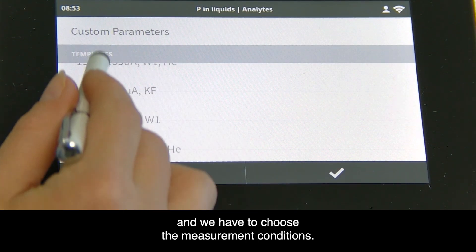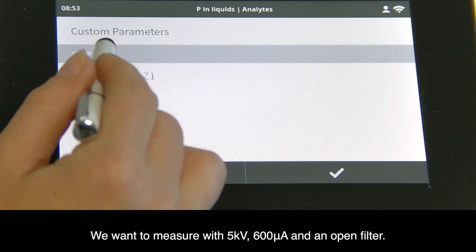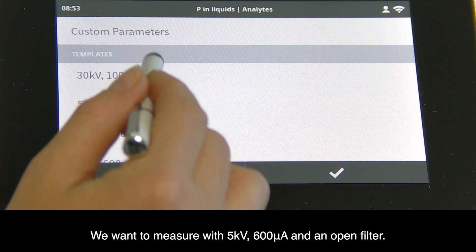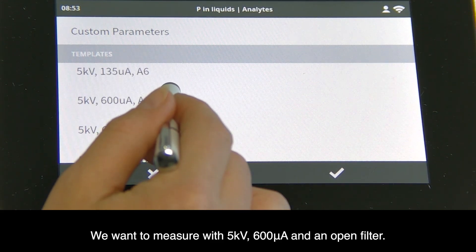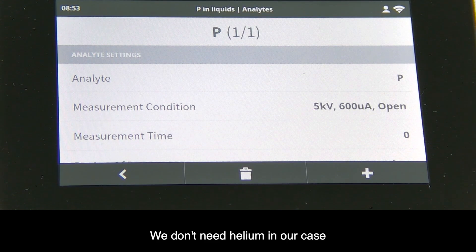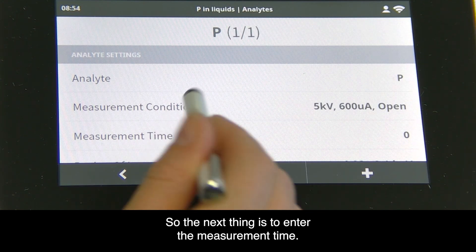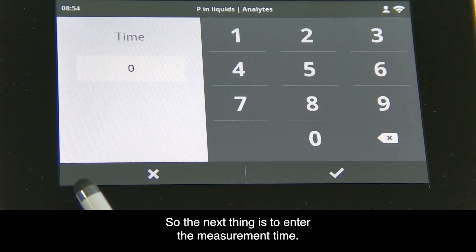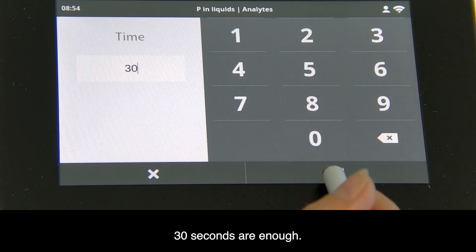We want to measure with 5kV, 600 microamps, and an open filter. We don't need helium because of the air density correction. Next we enter the measurement time - 30 seconds is enough.